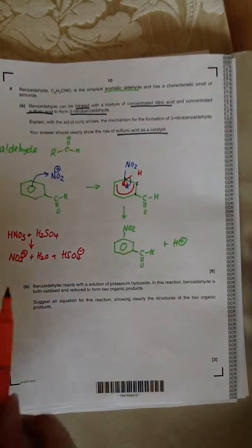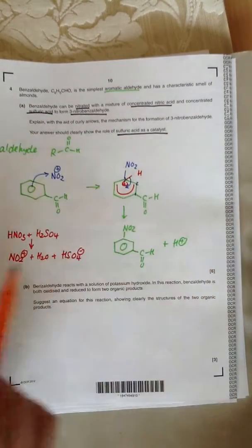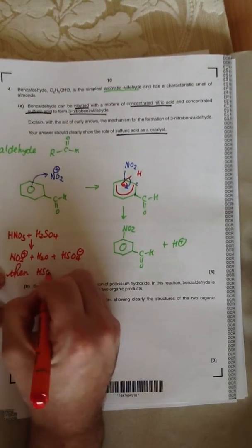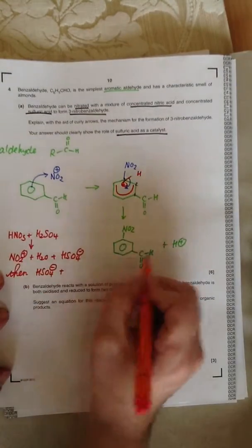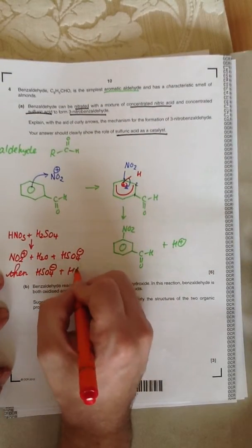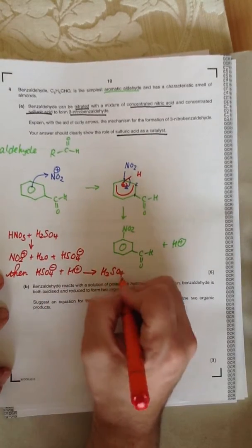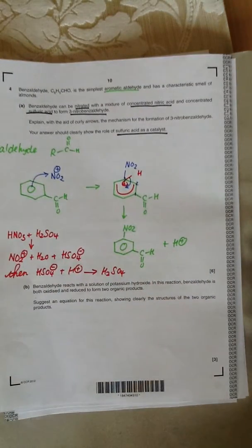Looking at the products of the nitration reaction, we have HSO4-. So then the HSO4- that we used to make the NO2+ ion reacts with the H+ from the reaction to regenerate H2SO4. Because the sulfuric acid is regenerated, it speeds up the reaction - it's a catalyst.